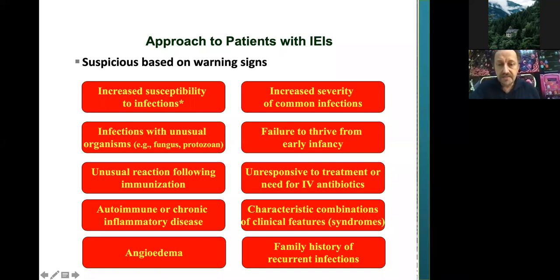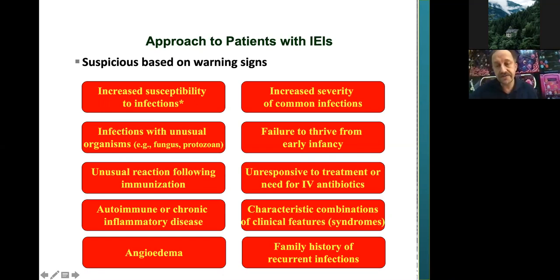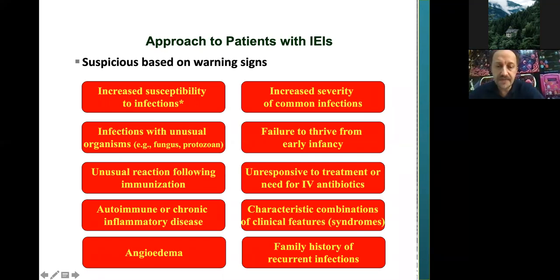The eighth warning sign is characteristic syndromic features of immunodeficiency, like DiGeorge syndrome, Chediak-Higashi syndrome, Griscelli syndrome type 2, and Wiskott-Aldrich syndrome. The ninth is angioedema in patients with C1 inhibitor deficiency — a complement deficiency leading to angioedema. Last but not least, the tenth is family history of recurrent infection or death in the family, which is especially important in regions with a high rate of consanguinity. If a patient has a history of sibling death, we should be suspicious of PID in the family.